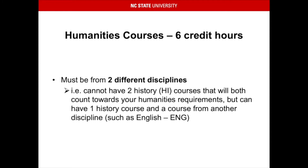Your humanities courses total six credit hours of your GEP requirements. They must be from two different disciplines. You cannot have two history courses, for example, that both count towards your humanities requirements, but you can have one history course and a course from another discipline, such as English.